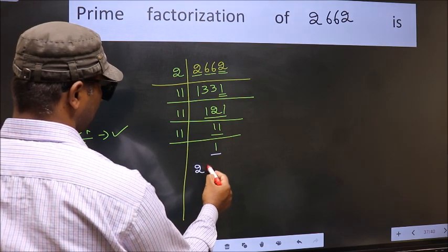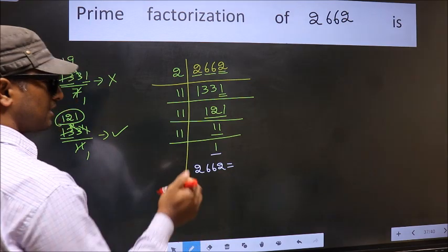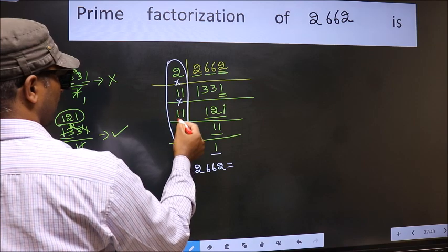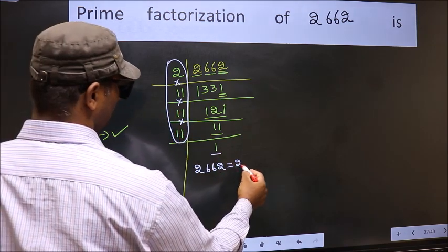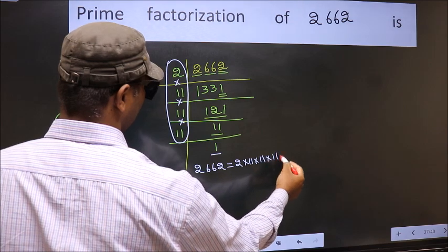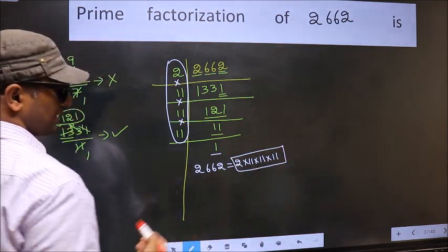So, the prime factorization of 2662 is the product of these numbers. That is, 2 into 11, into 11, into 11. This is the prime factorization of 2662.